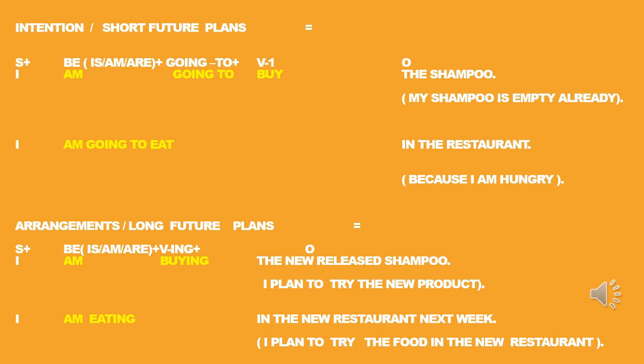'I'm going to eat in the restaurant.' Why? Because I'm hungry. If you are too hungry, of course you cannot cancel it anymore. But how about the second one? Arrangements — long future plans. Also, 'be going to' can be called short future plans. What you plan, you do it on the spot, not too long after you plan it. But for present continuous, you may plan it for a long time.